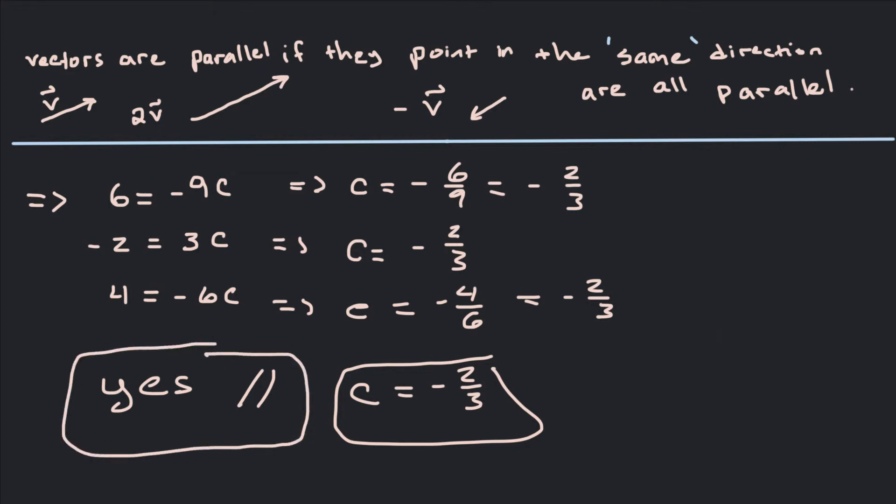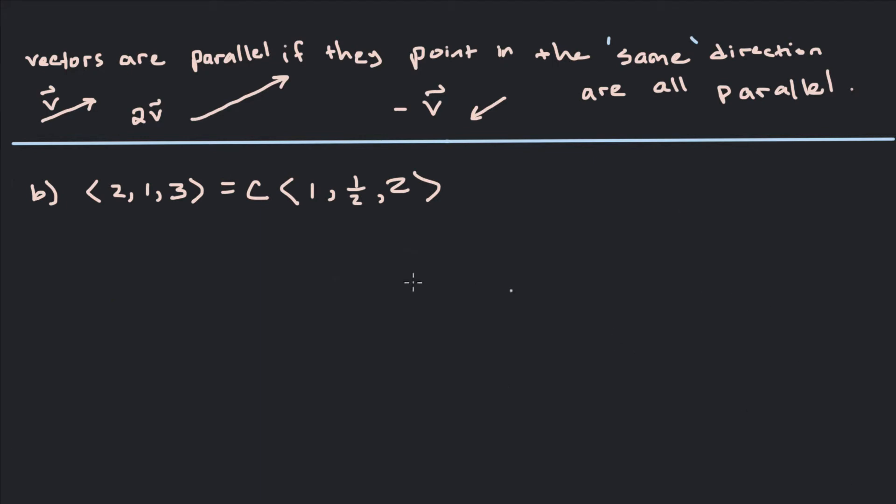So let's look at the second example. In our second example here we've got the first equation 2 would equal C. So 2 equals C. The second equation 1 is equal to 1 half times C. So look at these so far, these look pretty good. The first one tells us C equals 2. The second one tells us that C equals 2. But the last one let's look at 3 equals 2C. The last one would tell us that C is equal to 3 halves. So C is equal to 3 halves.